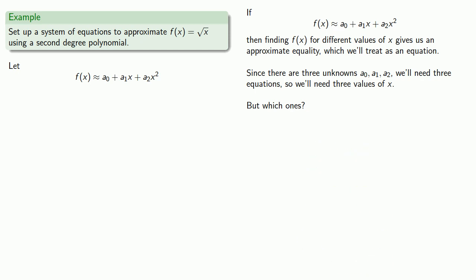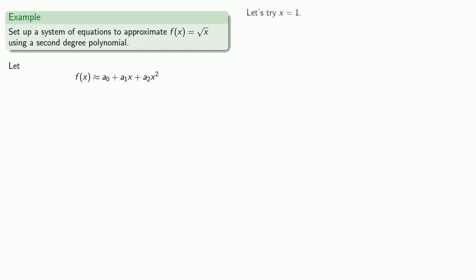Again, if you don't play, you can't win. We'll try out some values of x and see where they take us. Let's try x = 1. Then on the one hand, we know that f(1) is the square root of 1, which we know is equal to 1.